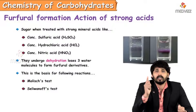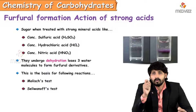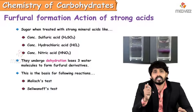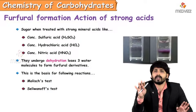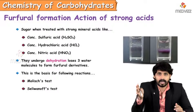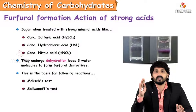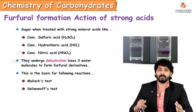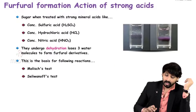Molisch's test is an identification test for carbohydrates — it is the basic test for any carbohydrate. Whenever you get a test sample and want to identify a carbohydrate, you perform Molisch's test. All carbohydrates — whether monosaccharide, disaccharide, or polysaccharide — will give a positive Molisch's test. Seliwanoff's test is specific to fructose, but the basis is the same.